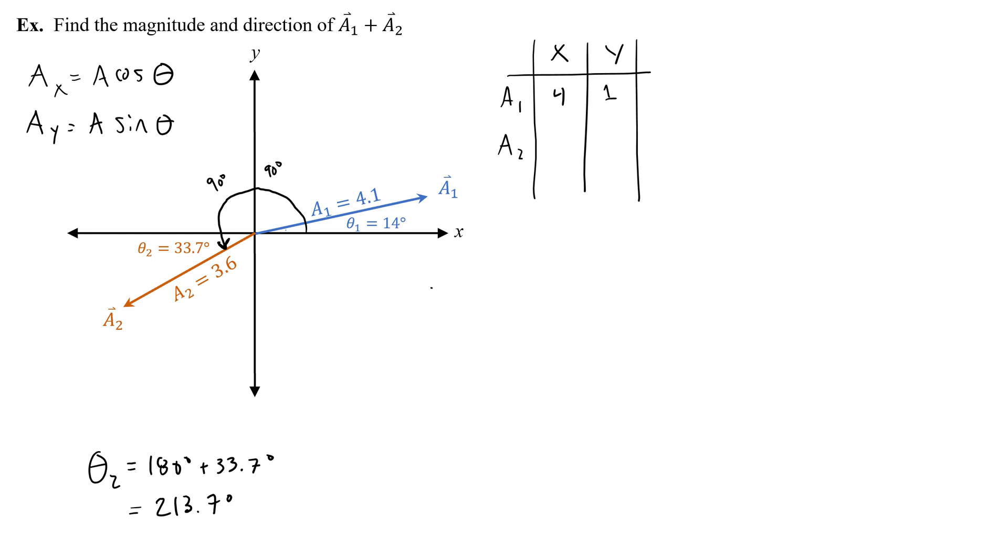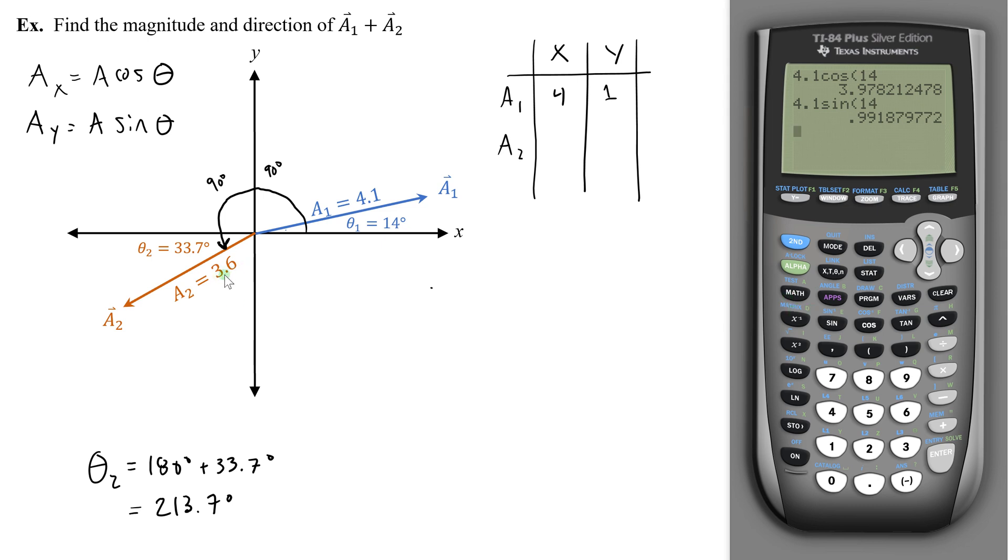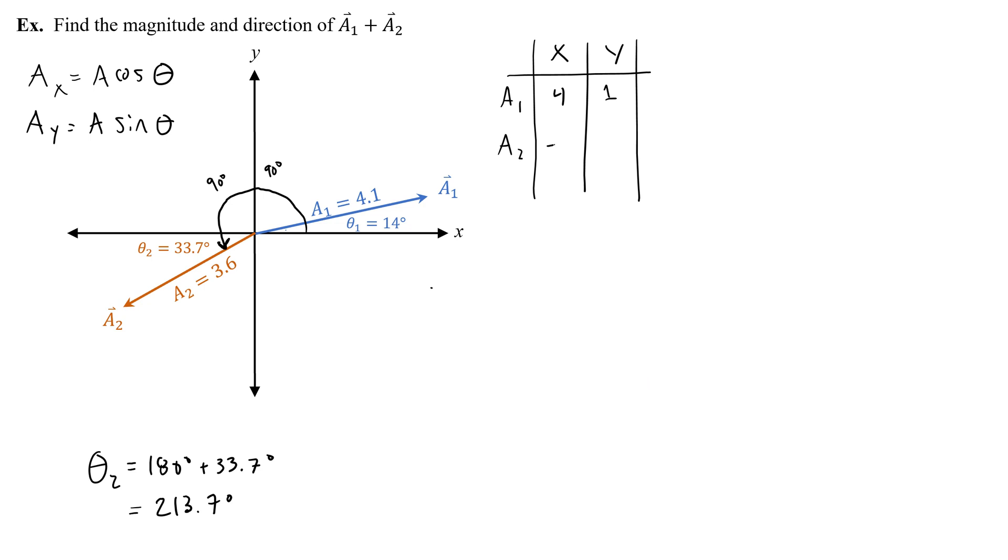So in my graphing calculator, when I find the x and the y component, I can use cosine for x and sine for y, as long as I use 213.7. So let's do that. 3.6 is our a, so we would do 3.6 cosine. And I'm not using 33.7. I'm using 213.7. This should give me a negative number, which it does, negative 2.99. Now that makes sense because the x component of this vector points to the left, because this vector points to the left and down. So negative 3 is my x, which I'm going to write right here, negative 3.